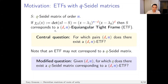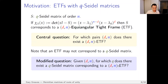I'm not working in full generality; I'm restricting to cases where we have a q-Seidel matrix corresponding to the ETF. Instead of addressing that central question directly — which is apparently quite difficult — I'm going to consider a modified question: given d and n, for which q does there exist a q-Seidel matrix corresponding to a d-n ETF?